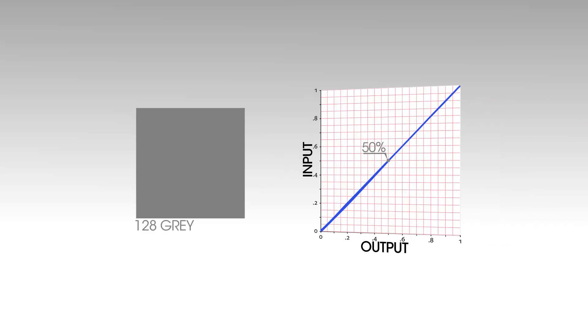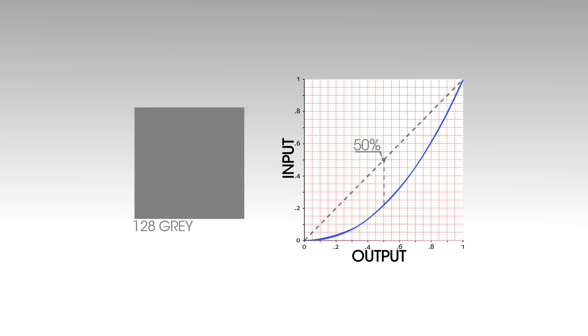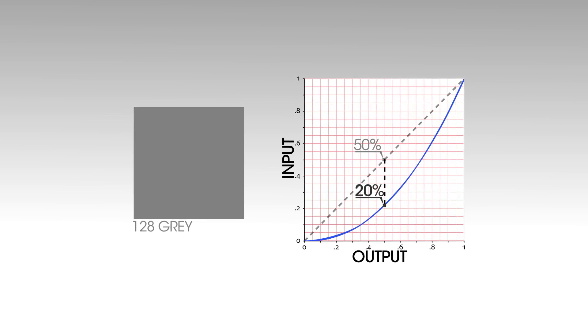So a value halfway between these points, like 128, should be 50% gray, right? Well, not really. A value of 128 actually represents a gray value of about 20%. Why?